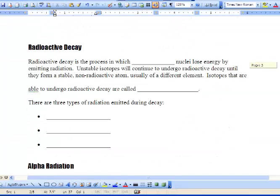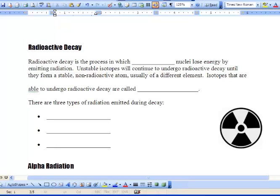Now, what we have now is we're going to be talking a little about radioactive decay. And what it is, it's the process in which unstable nuclei lose energy by emitting radiation. Unstable isotopes will continue to undergo radioactive decay until they form a stable, non-radioactive atom. And this is usually a different element.